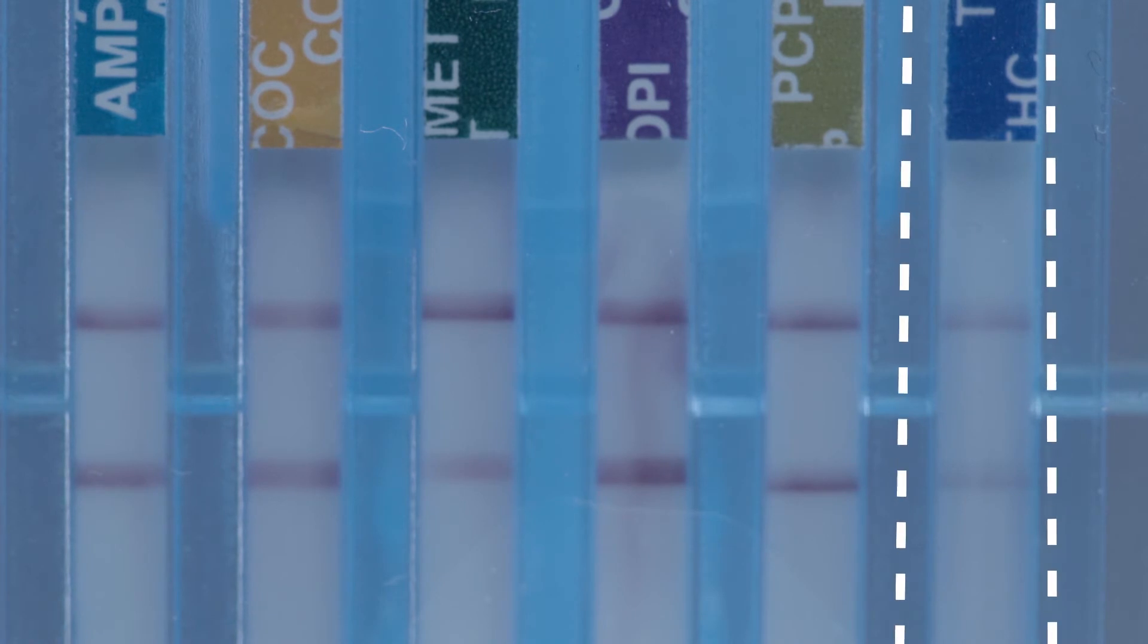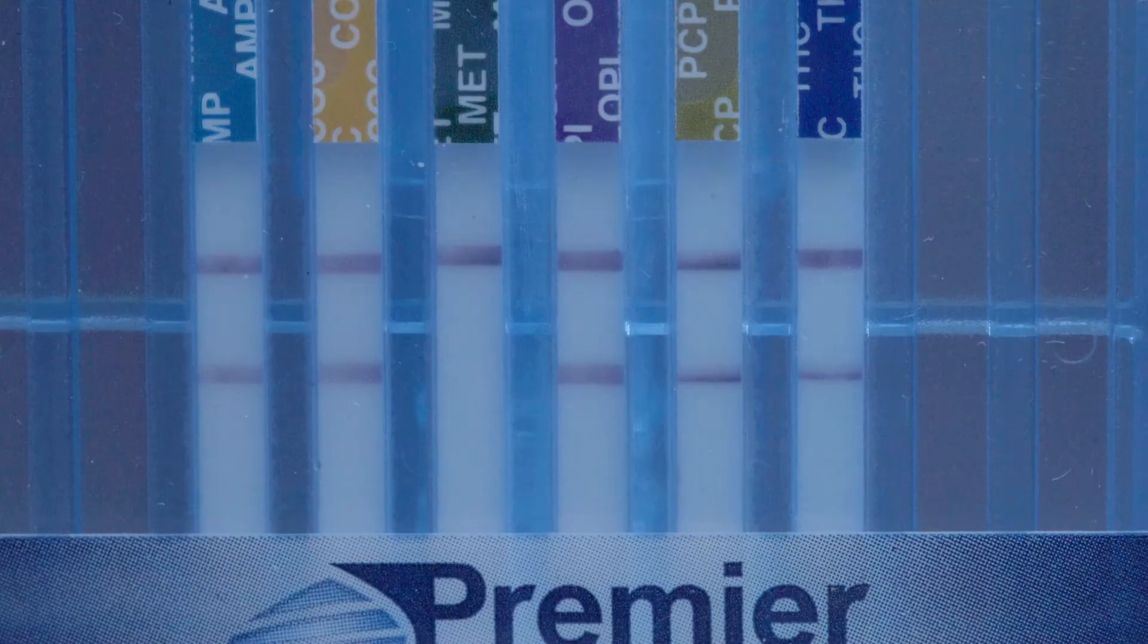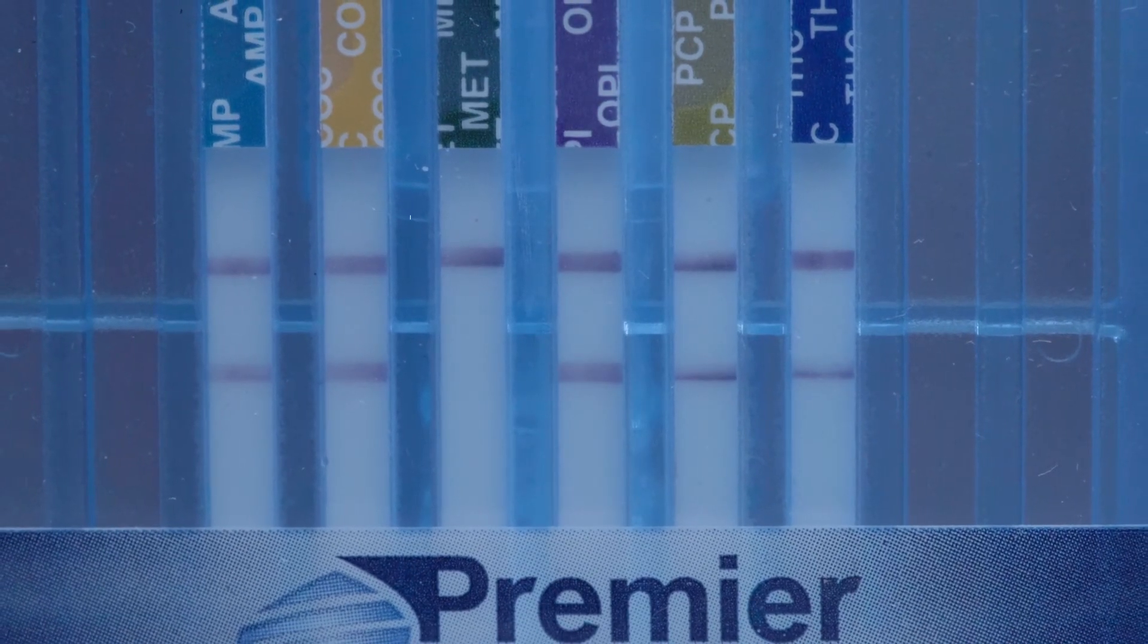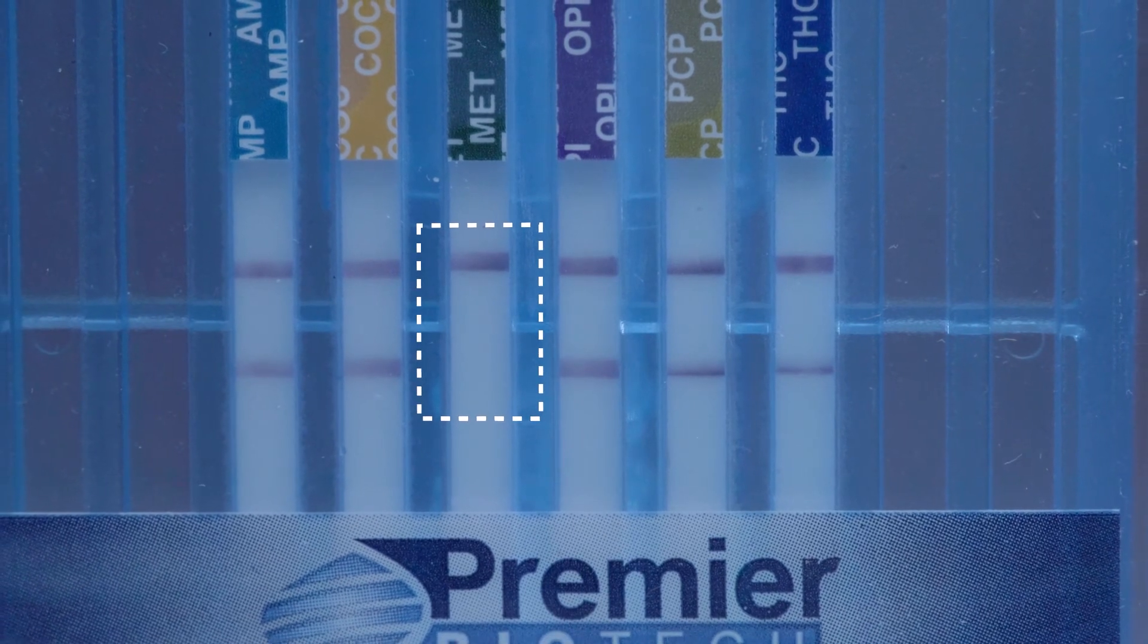It is normal for THC to run slower than other test strips. A presumptive positive result, as seen in this example, is indicated by only the top control line present and the absence of a bottom test line.